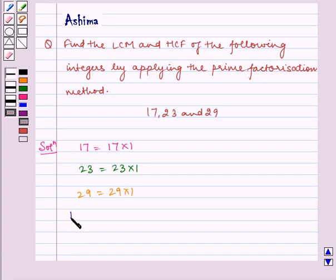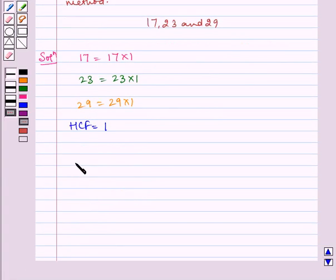Therefore, HCF is equal to the common term, that is 1. Now let's find out the LCM. To find the LCM, we have to do the prime factorization of 17, 23, and 29.